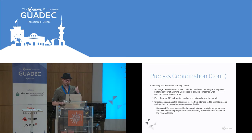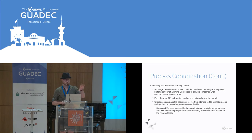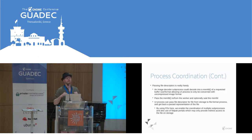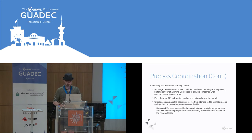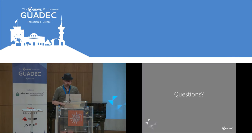Another nice thing about using file descriptors and passing them between processes is you could have a dedicated storage process. That storage process could give you a file descriptor of some content, and then you could pass that across to a network process, avoiding copying the memory around. So if you have a really big file you want to upload, you won't need to move that between processes and copy all of that memory — instead you just open a file descriptor, load it in one zone, and pass it to the other zone.